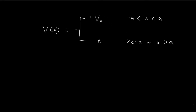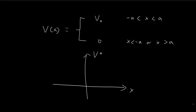For this problem, we have a potential that looks something like this, and we can represent it graphically. We have the x-axis and the vertical axis, V of x. Within the region negative a to positive a, the potential takes on the value positive V₀, and everywhere else it's just zero. What we want to do in this video is to find the transmission coefficient for a particle in such a situation, and we can divide this scenario into three different cases.